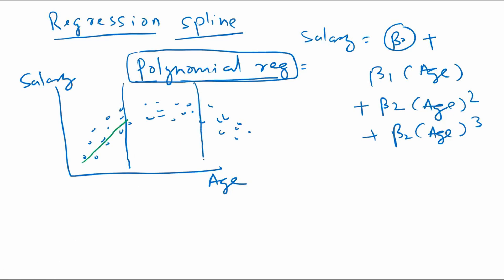The second section of this data is more of a constant — it's parallel to the x-axis — so you can fit a straight line again to this data. The third one is a downward sloping line, so you can fit a straight line here as well. This would fit better than simply fitting a polynomial equation to the entire data. The idea is to split the data points into a few segments so that there is a uniform relationship within each small segment.